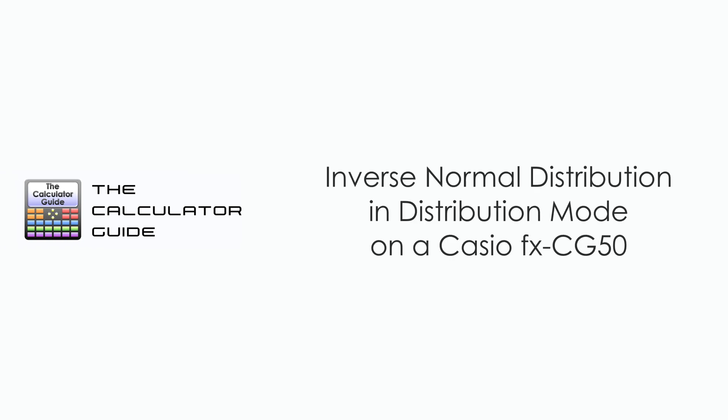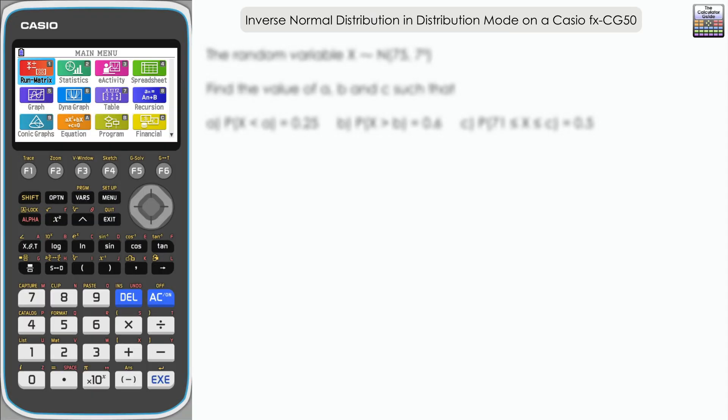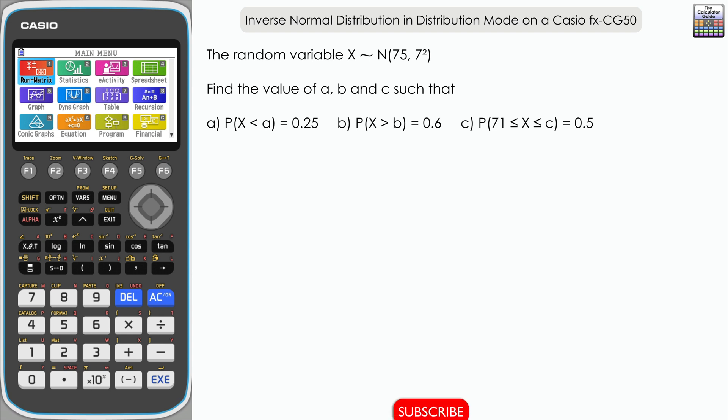Hello and welcome to the Calculator Guide video on inverse normal distribution in distribution mode on a Casio FX-CG50. We have the random variable X which is normally distributed with a mean of 75 and a variance of 7 squared.